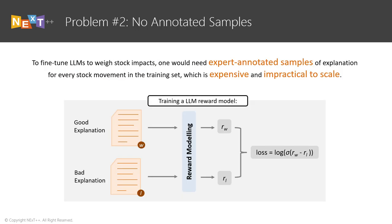Secondly, the problem gets progressively harder with the introduction of the explanation component. This requires the LLM to explain verbally why certain factors are more important than the others. In order to fine-tune LLMs to make explanations, we need training samples of explanation for every stock movement, which is expensive and impractical to scale. The diagram shows a typical process for doing reinforcement learning on LLMs. It requires the use of good and bad explanations to train a reward model, which is difficult to obtain.